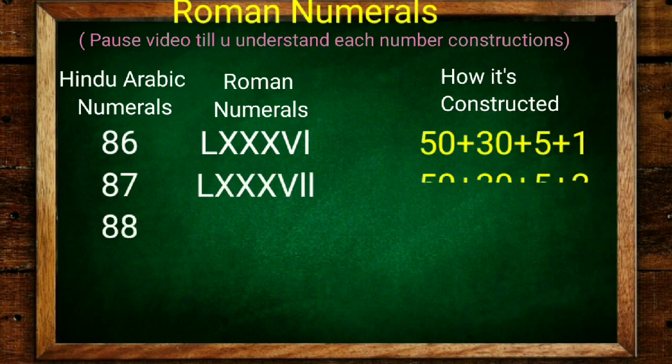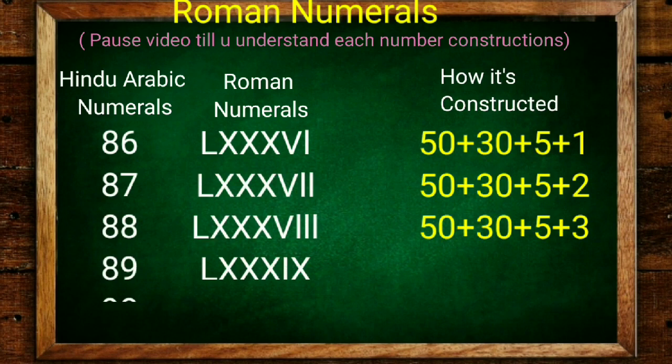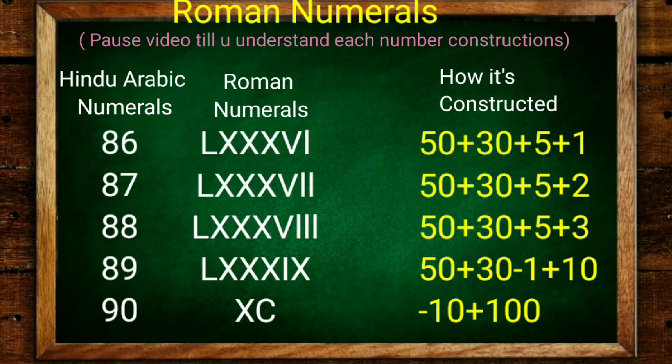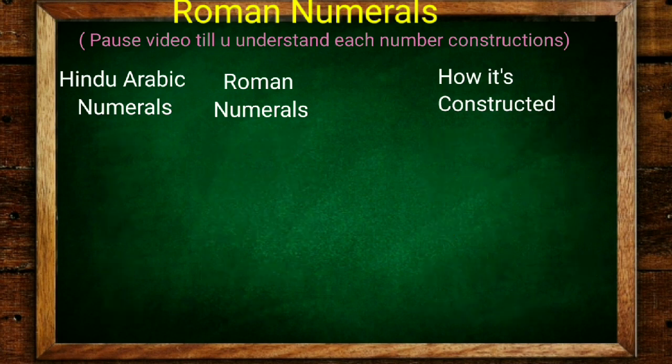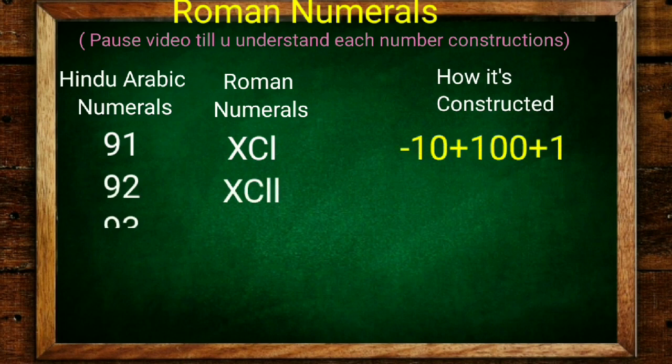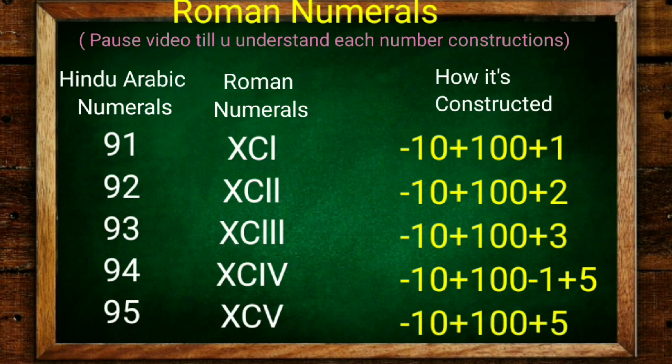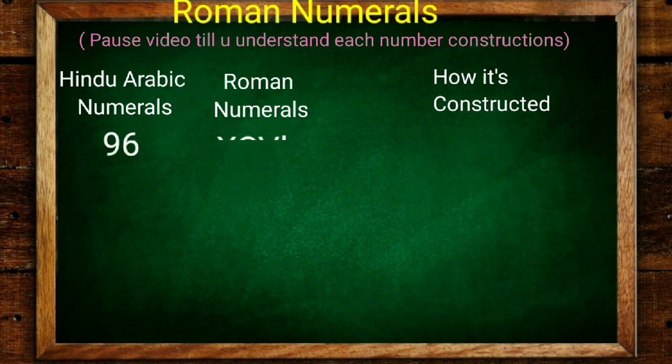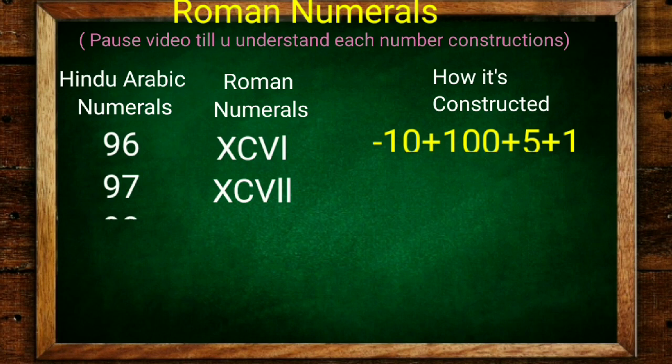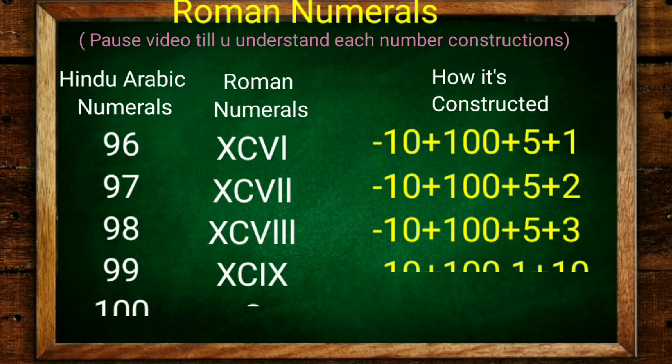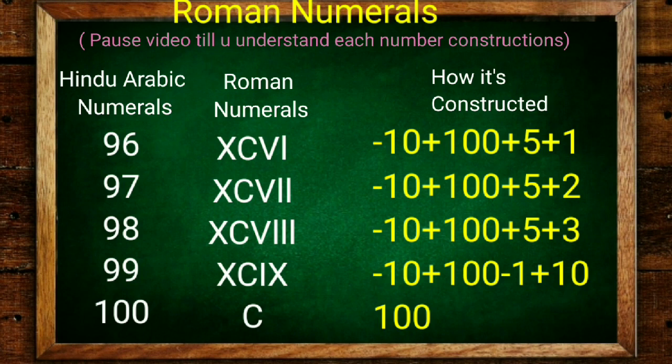Now we're going to 86: 50 plus 10 plus 10 plus 10 plus 5 plus 1. 87, 88, 89. 90 is important - you got another new number, that is C. C minus 10 is 90. So 91 is C minus 10 plus 1. 94 is 90 plus 4. 95 is 100 minus 10 is 5 minus 1, and 95.